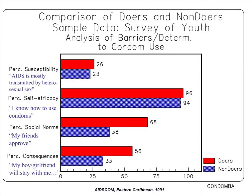But is it really? Comparing doers (those using condoms, the red bars) to non-doers (those not using condoms, the blue bars), while perceived susceptibility is low, it's actually low amongst both groups — so it doesn't appear to be driving condom use. Instead, it's perceived social norms — 68% of those using condoms said their friends approve, versus only 38% of non-doers — and perceived consequences: 56% of condom users said their boyfriend or girlfriend would stay with them, versus only a third of non-doers. You can't just take KPC data and come up with the best messages; you need a tool to compare doers and non-doers, and barrier analysis is great for that.